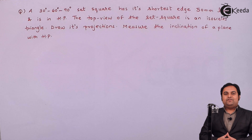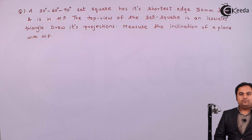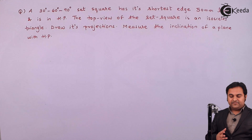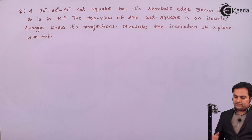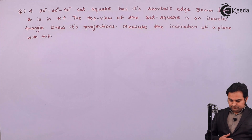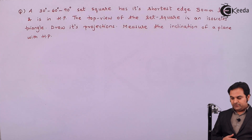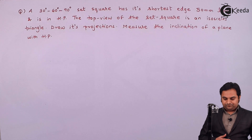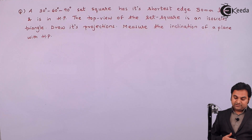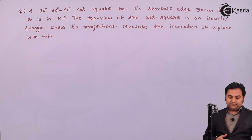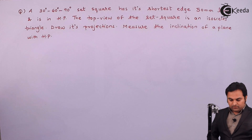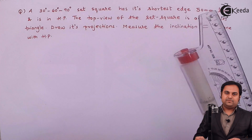Hello friends, in this video we are going to see a problem on projection of plane. The question is: a 30-60-90 degree set square has its shortest edge 50 mm long and is in HP. The top view of the set square is an isosceles triangle. Draw its projections and measure the inclination of the plane with HP. First I'll draw the XY line and then explain the conditions.